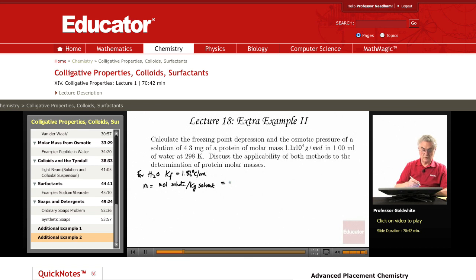That equals 4.3 milligrams, that is 4.3 times 10 to the negative 3 grams, divided by 1.1 times 10 to the fourth grams per mole. That's the number of moles of solute.